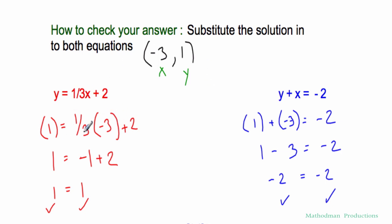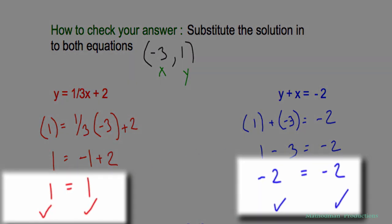Negative three is my x value and one is my y value. Just plug it into both equations, and in the end, they should both make true statements. If that happens, then you did the problem right.